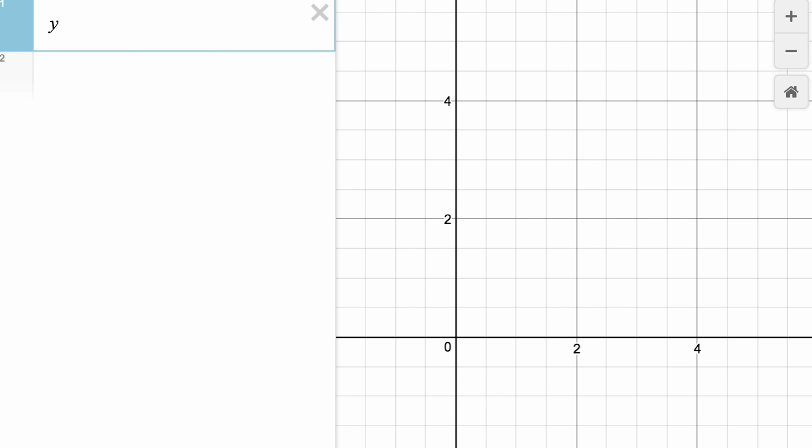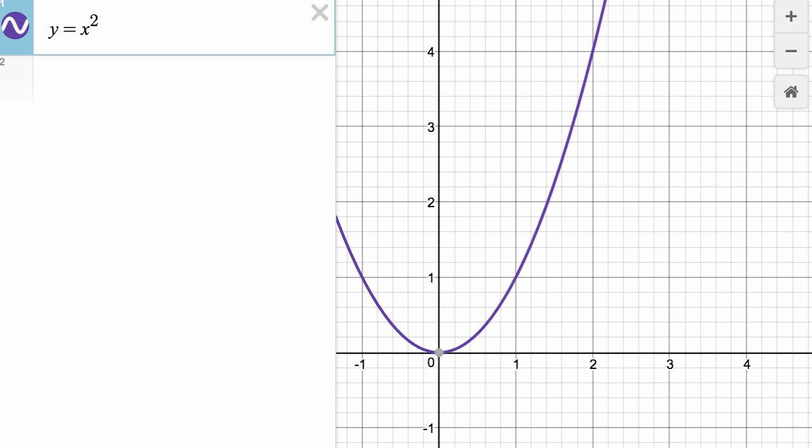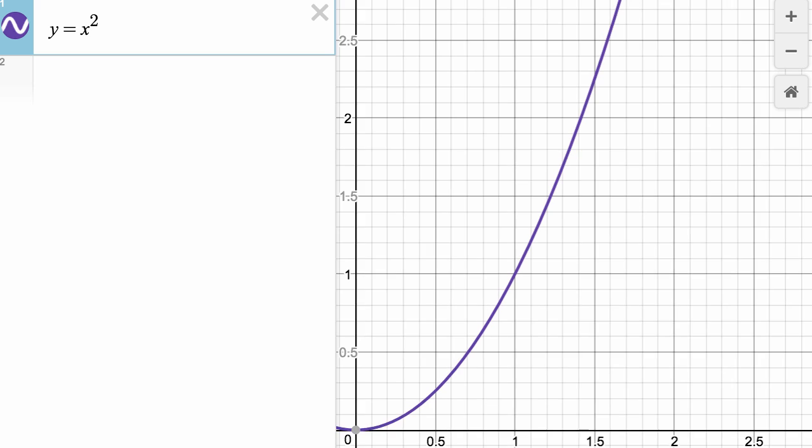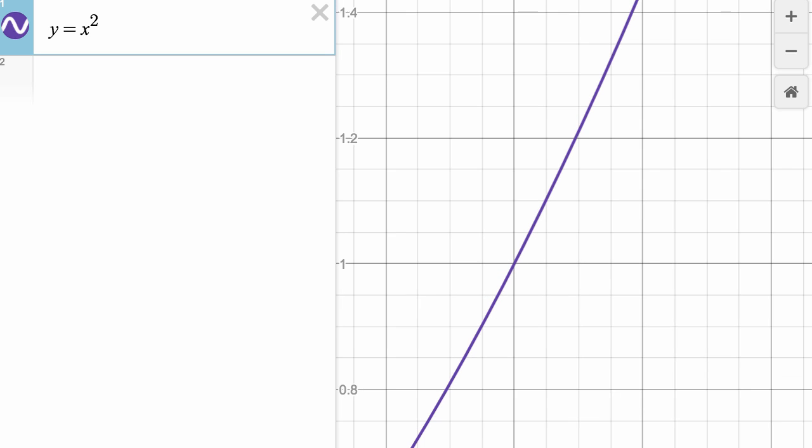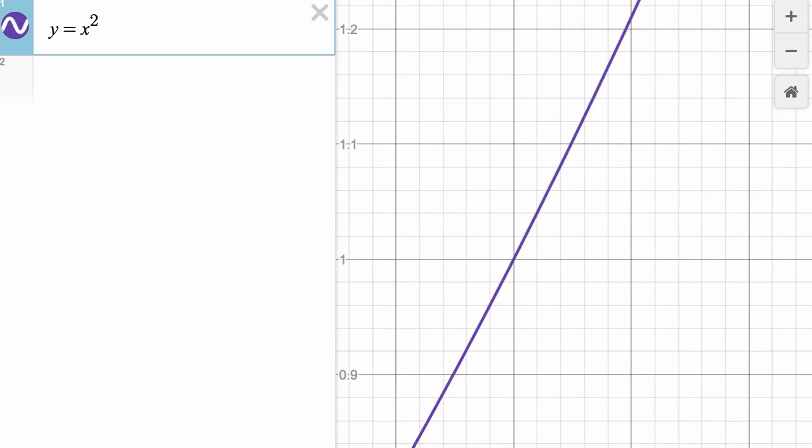So let's say we had y is equal to x squared. That's that there, clearly a nonlinear function. But we can zoom in on a point and if we zoom sufficiently in, we will see that it looks roughly linear. So let's say we want to zoom in on the point one comma one. So zooming in on the point one comma one, already it is looking roughly linear at that point.